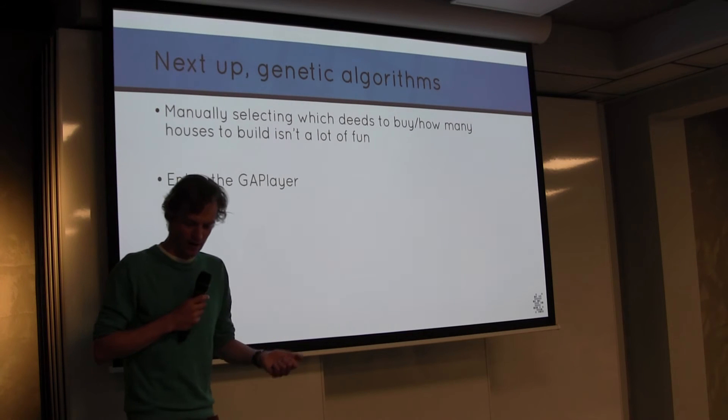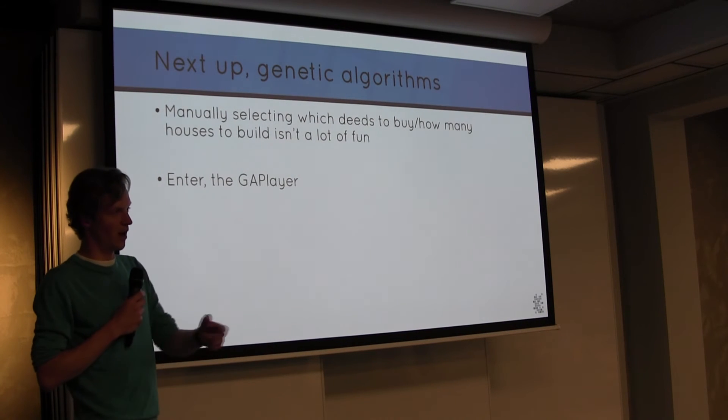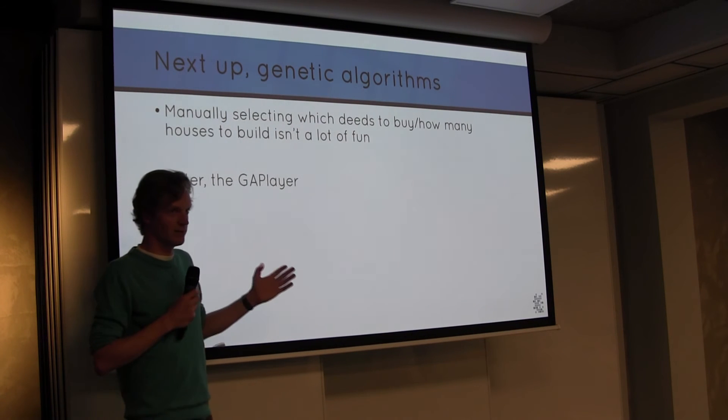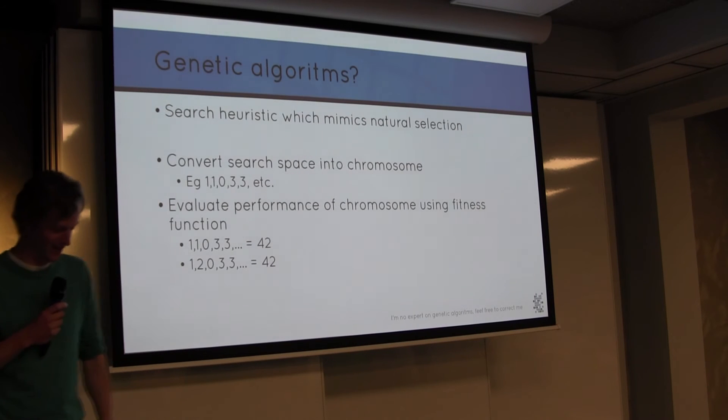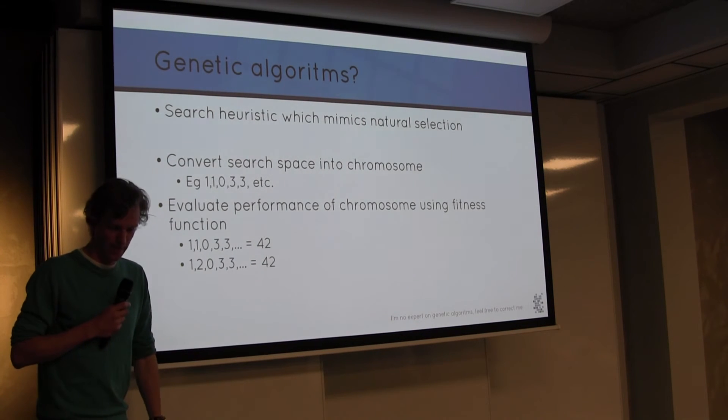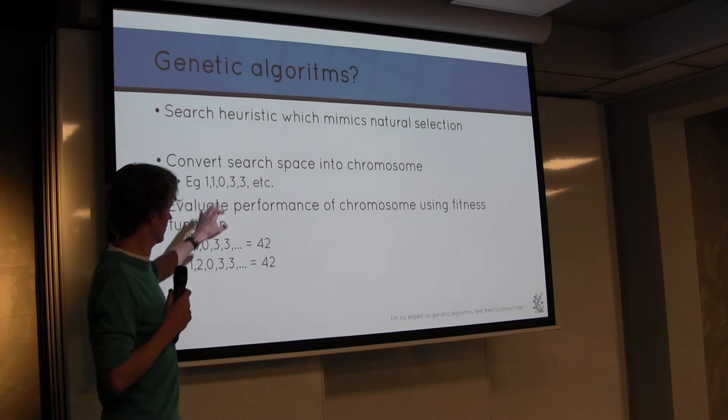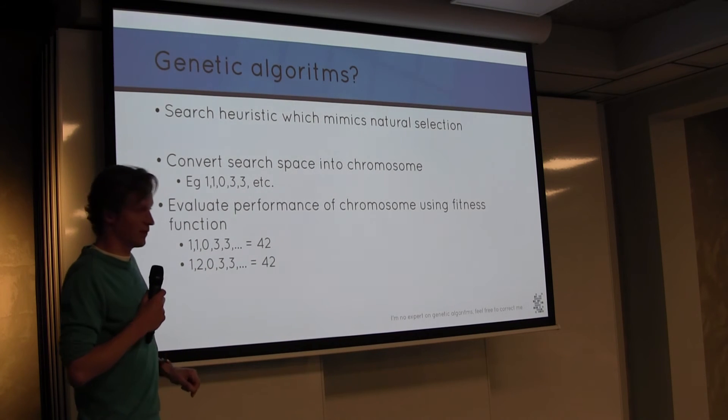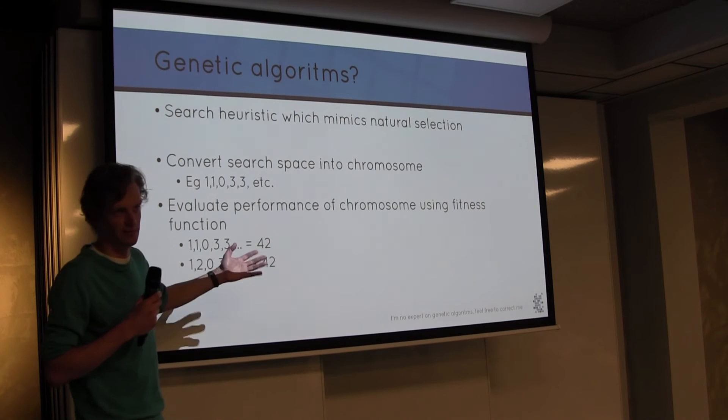But this manually selecting or manually curating players was actually quite cumbersome. Because how many houses should you actually build? Or which of the houses should you build? It's quite a computationally big problem. So what I did is I made a GA player. It's a genetic algorithm player. I like it as well.